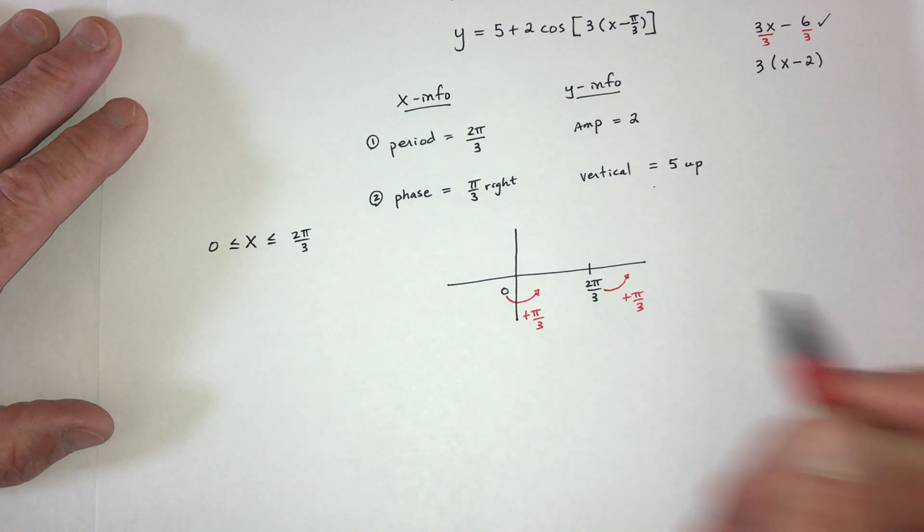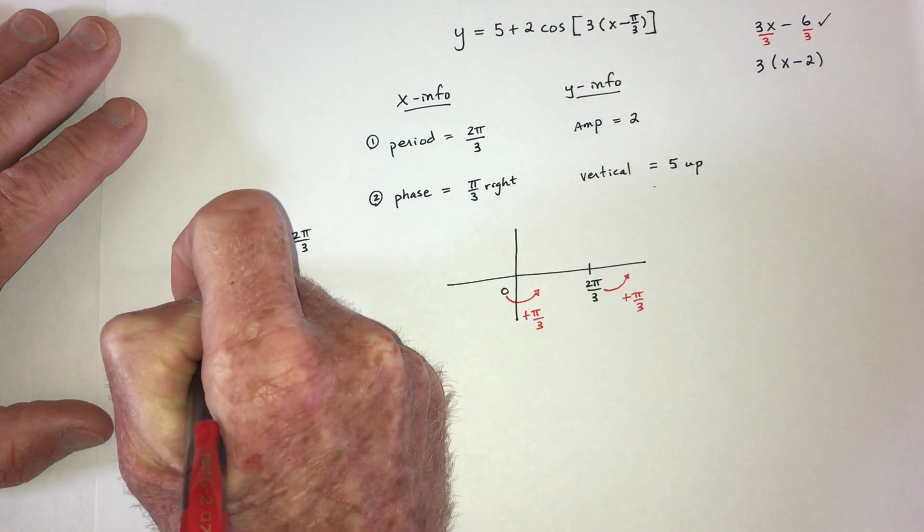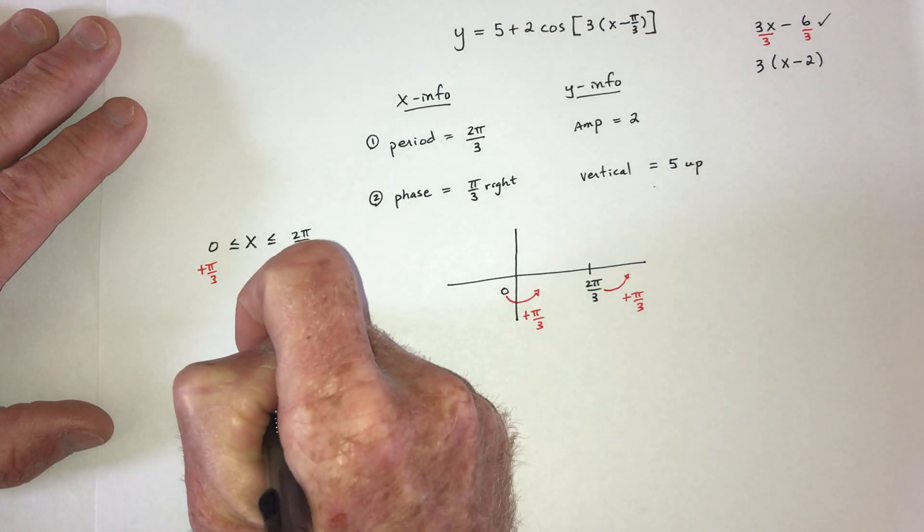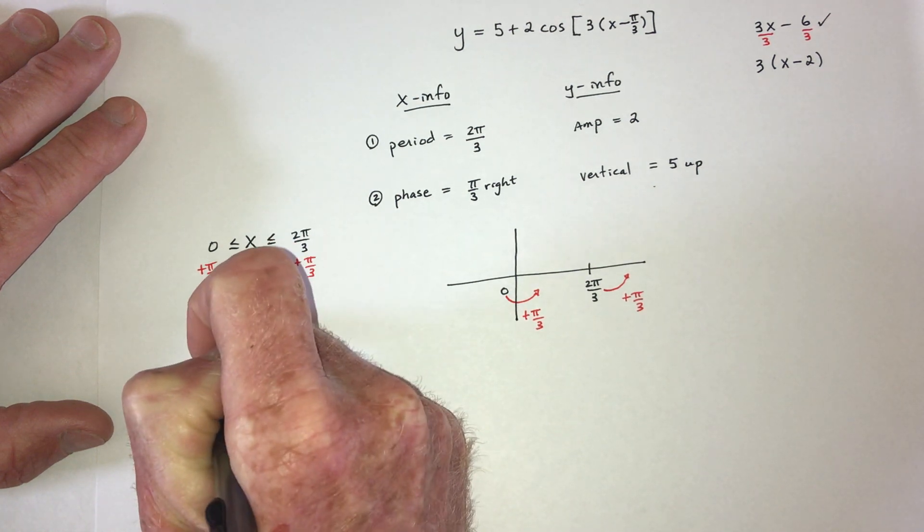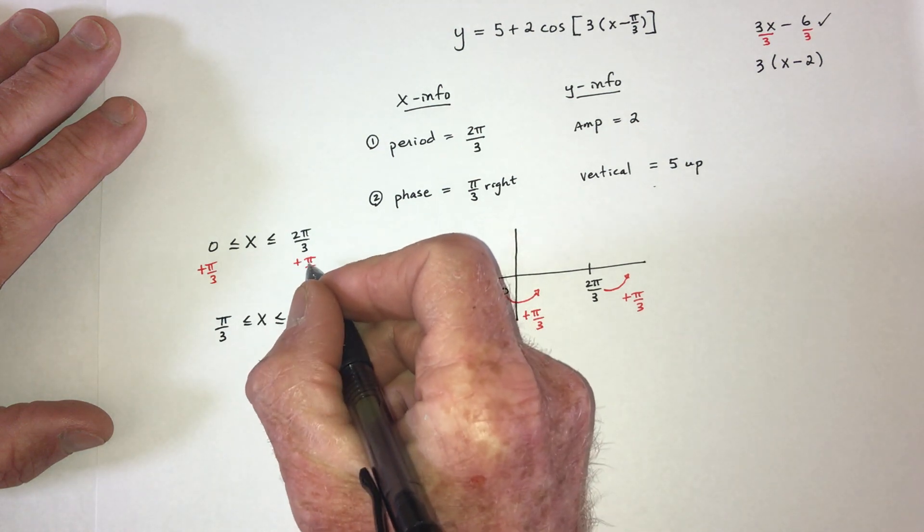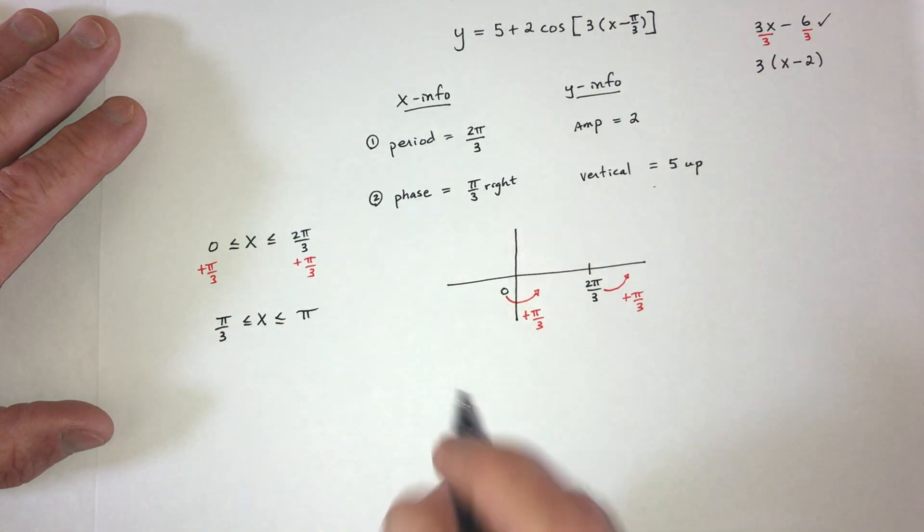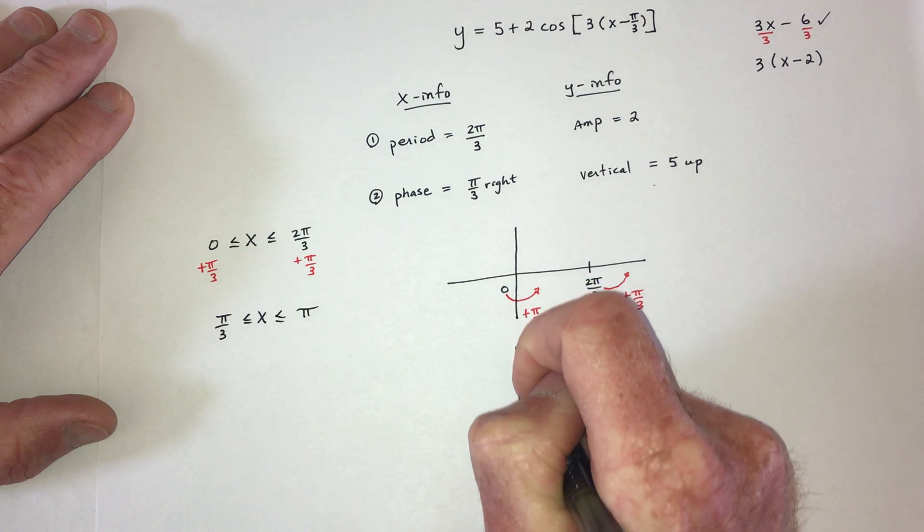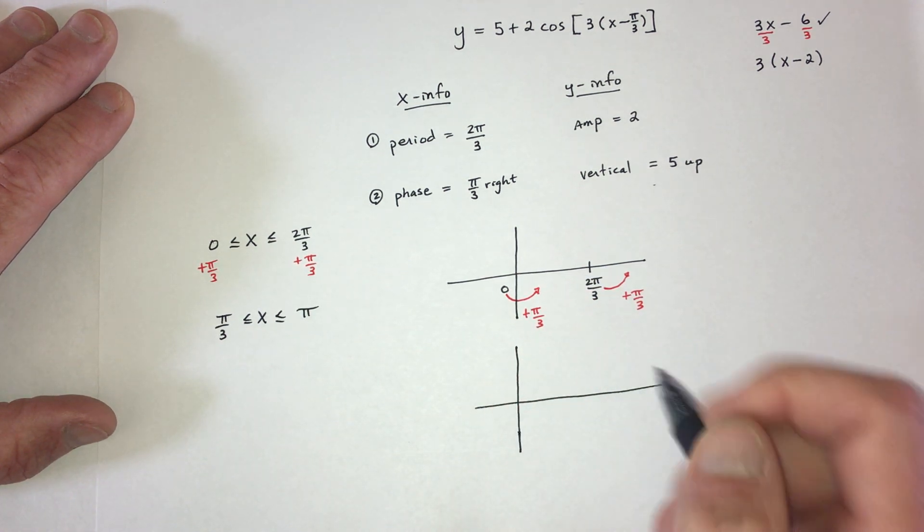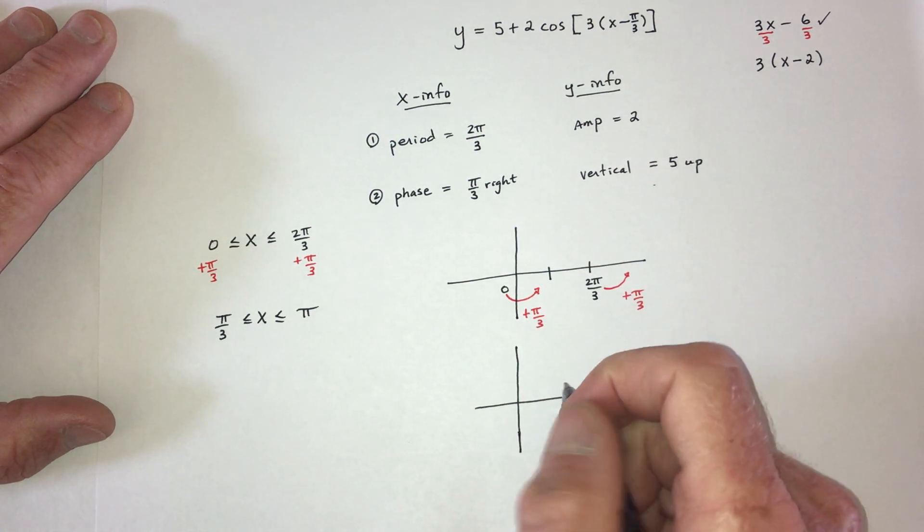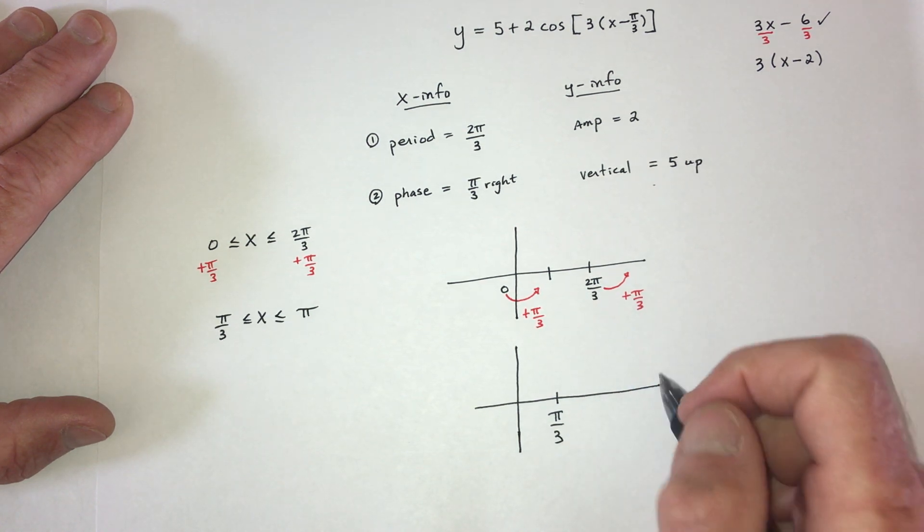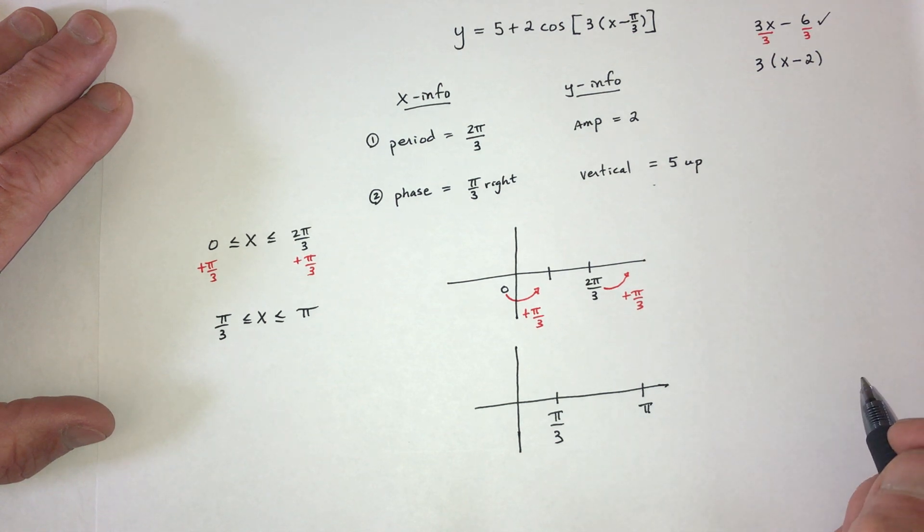And then get a red pen and shift it to the right. So add π over 3 and add π over 3. So that means that x is sandwiched between π over 3 on the left and 2 π over 3 plus 1 more is 3 π over 3 or π on the right. So you could do it that way or you could do it this way. So once you add π over 3, that's going to be 0 plus π over 3 is π over 3. And for this one, 2 π over 3 plus π over 3, that's π. Okay, that's the x-axis information.